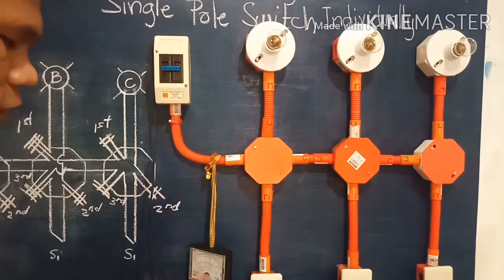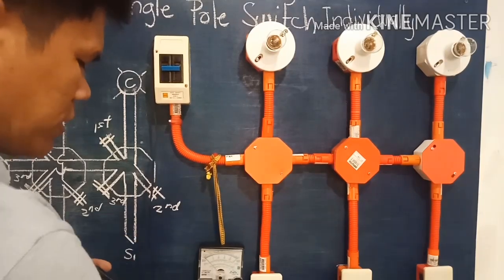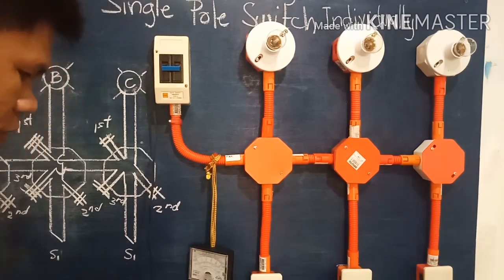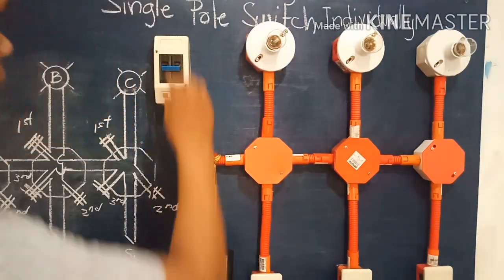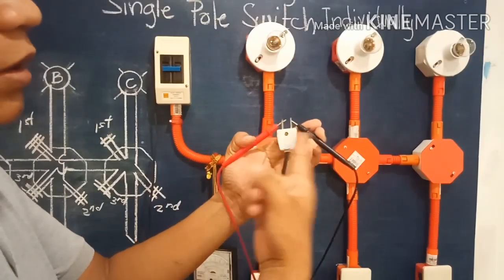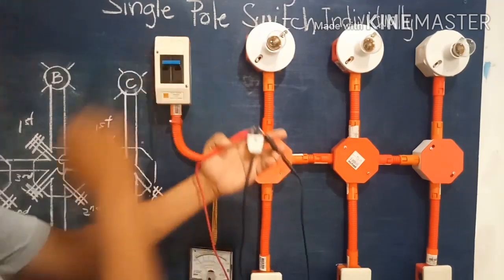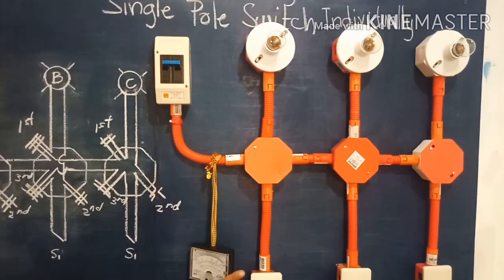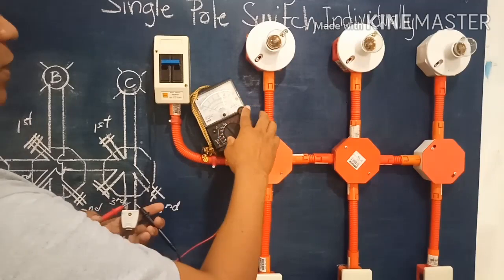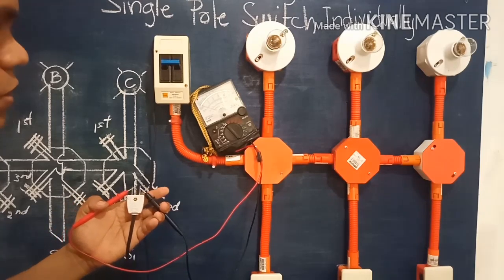Before we energize, we will check functionality first using the multi-tester on the times-one setting. We switch on the circuit breaker for testing. Based on our multi-tester, there is no reading initially, meaning the switches are still off. We will now try switching on the first bulb.